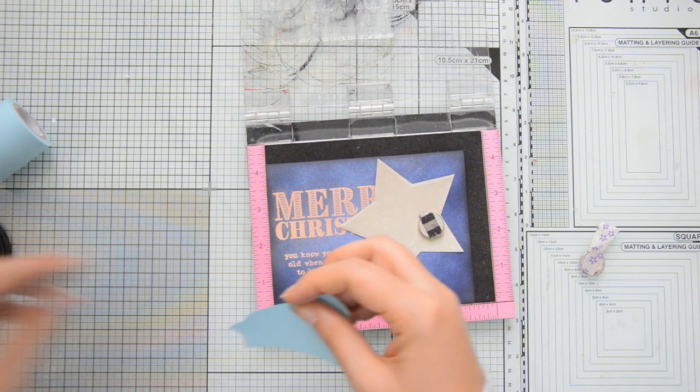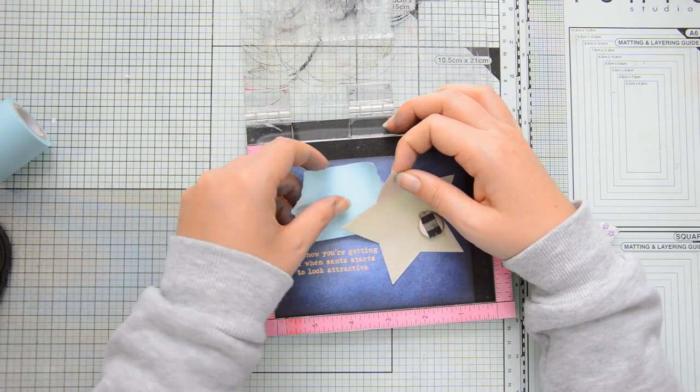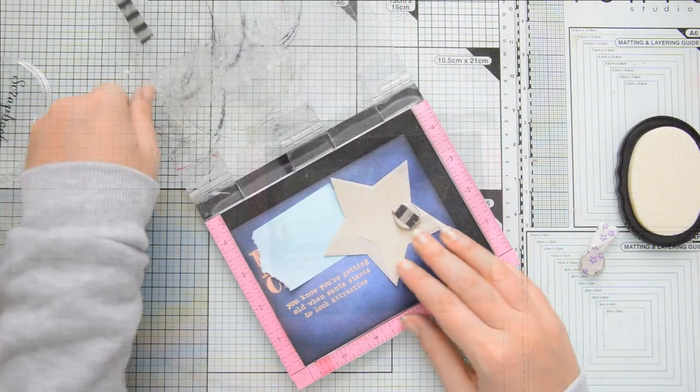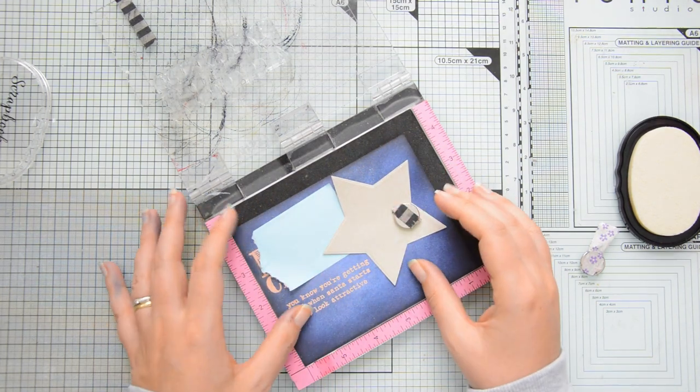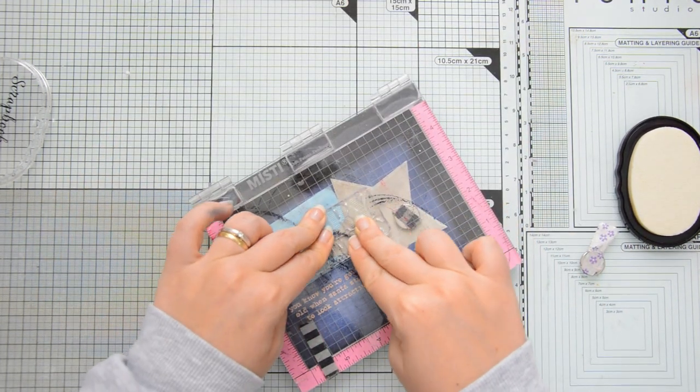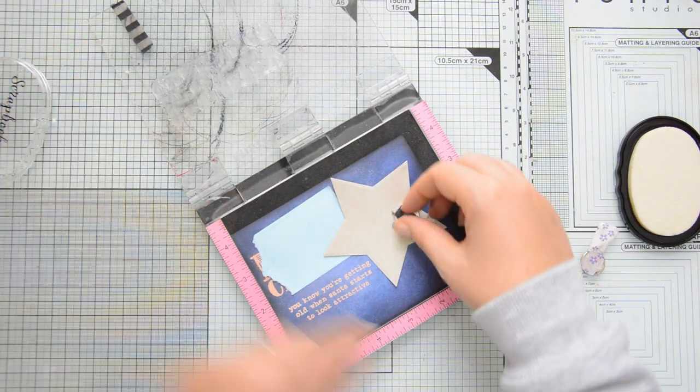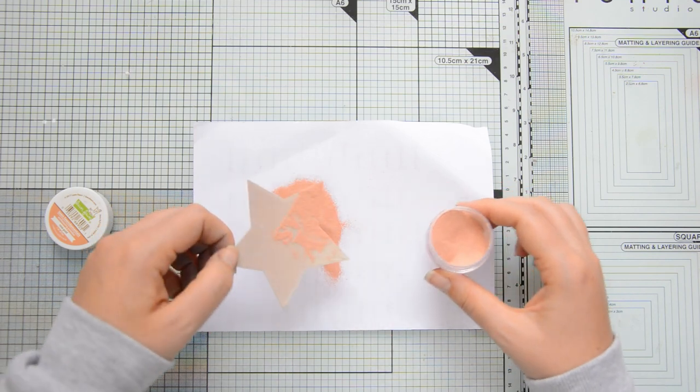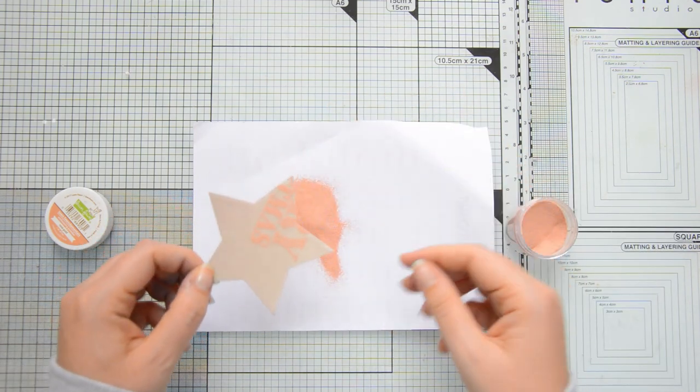I'm going to use some Heffy Doodle memo tape to protect my card base and then after I have positioned the star correctly I can go ahead and stamp the sentiment again with embossing ink on top of the star, coat it with the same Lawn Fawn rose gold embossing powder and heat set the powder with my heat gun.